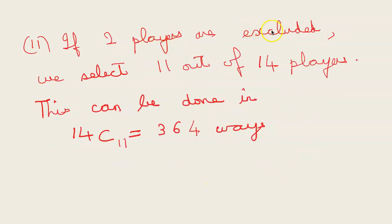And in the second case 2 players are excluded. So we are selecting 11 out of 14 players. This can be done in 14C11 which is 364 ways. So when 2 players are included there is a different answer, and when 2 players are excluded also the answer is different.